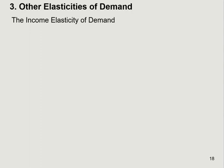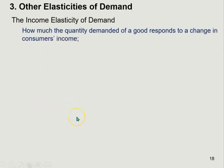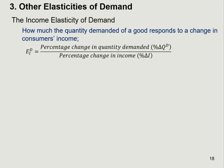The first one is income elasticity of demand. Similar to the way we define the price elasticity of demand, here we're looking at the relationship between the percentage change in income and percentage change in quantity demanded. Formally, the income elasticity of demand means how much the quantity demanded of a good responds to a change in consumer's income. Mathematically, we use E superscript D and subscript I, which stands for income, equals the percentage change in quantity demanded over percentage change in income.